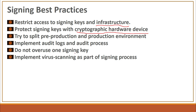Fifth, do not overuse one signing key. One signing key should be used only for a limited number of software products, not to sign hundreds of different software packages. We should avoid overuse of a single key, because if one key is compromised, you will have an impact on all of your products or solutions. Sixth, implement virus scanning as part of the signing process. When we sign the software, we should perform virus scanning first — because if a virus is embedded into your code and you sign that code, you effectively become the author of that virus.